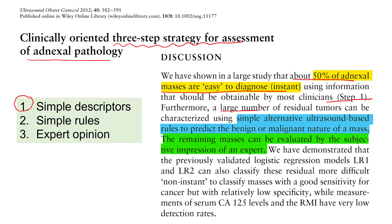A large number of residual tumors can be characterized by using simple alternative ultrasound-based rules to predict the benign or malignant nature of a mass. These are called simple rules. The remaining masses can be evaluated by a subjective impression of an expert, so the third step is expert opinion.